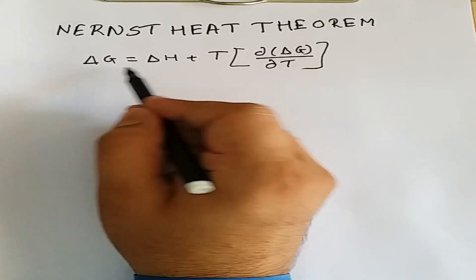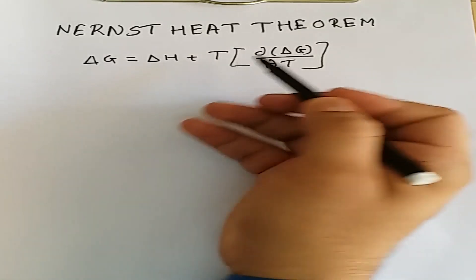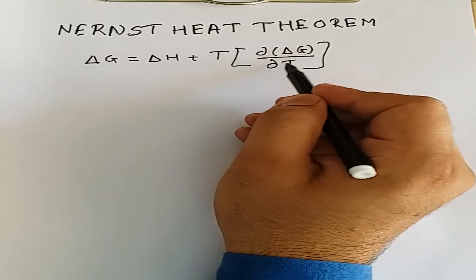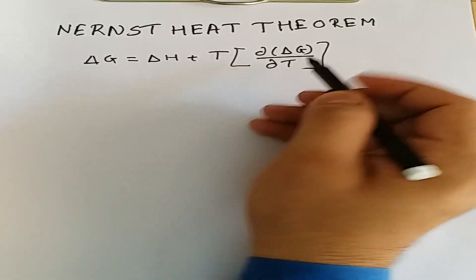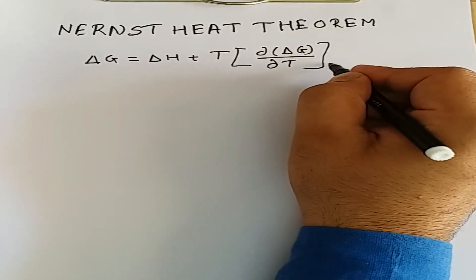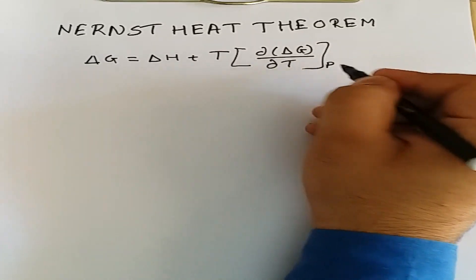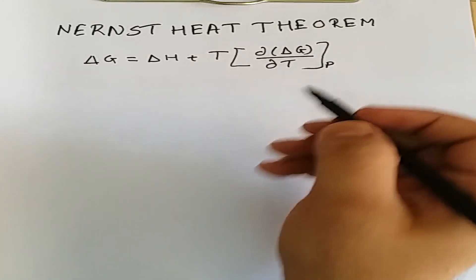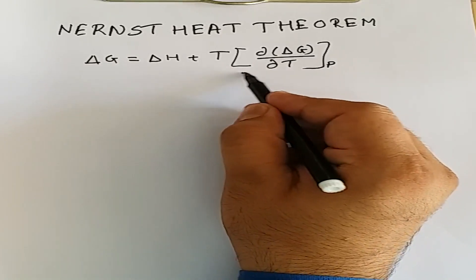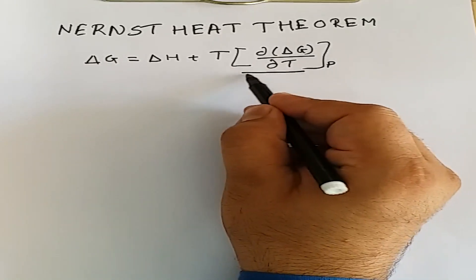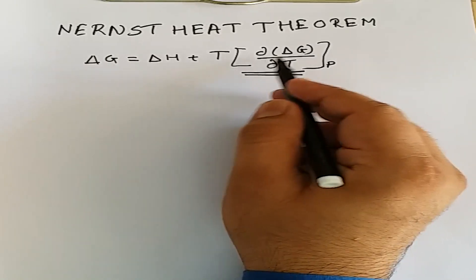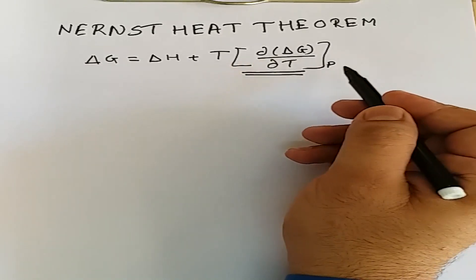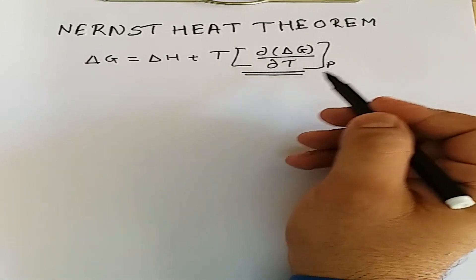The Gibbs-Helmholtz equation is: ΔG = ΔH + T(dΔG/dT) at constant pressure. In this equation, the second term — T(dΔG/dT) — is a finite quantity, meaning it has some value.